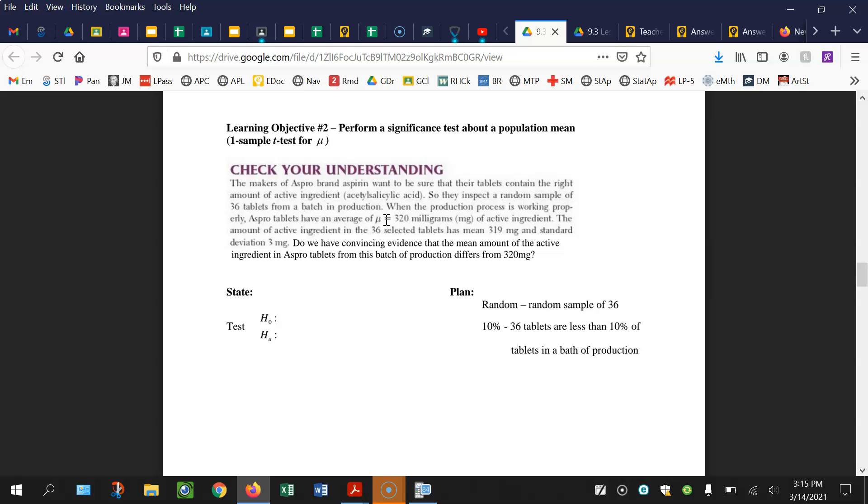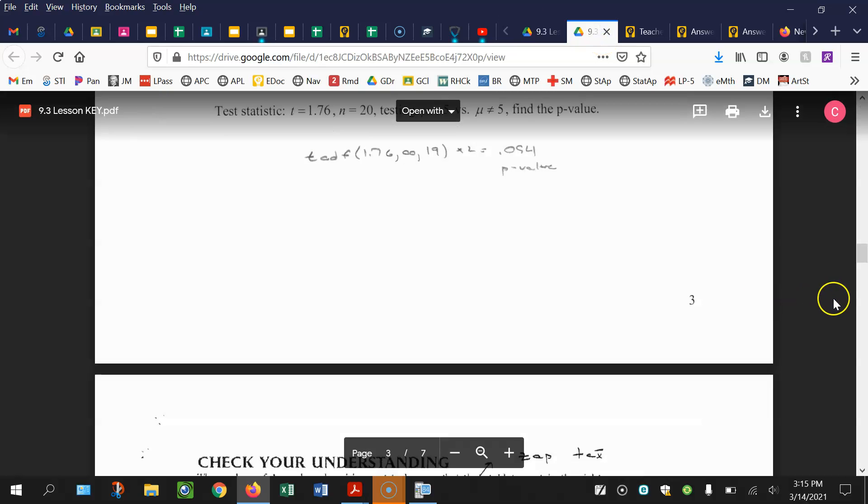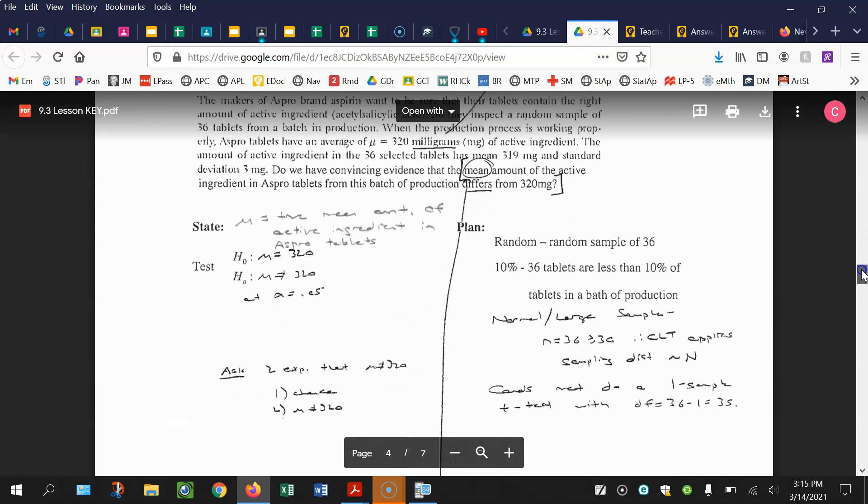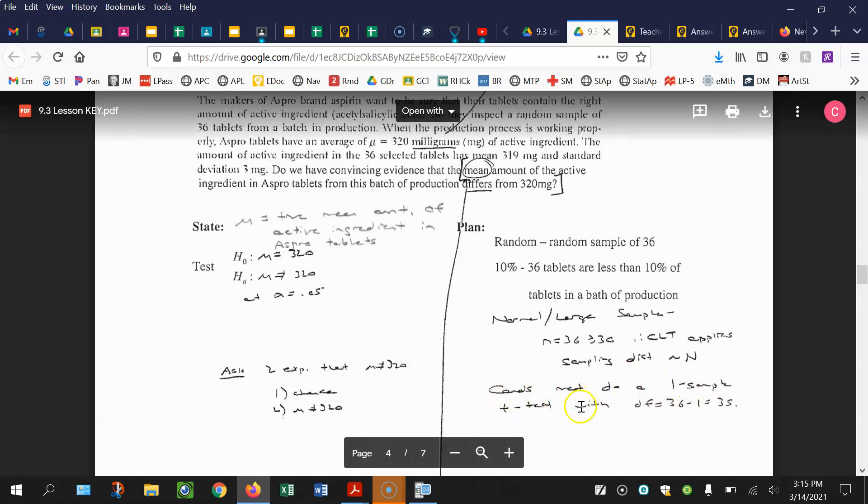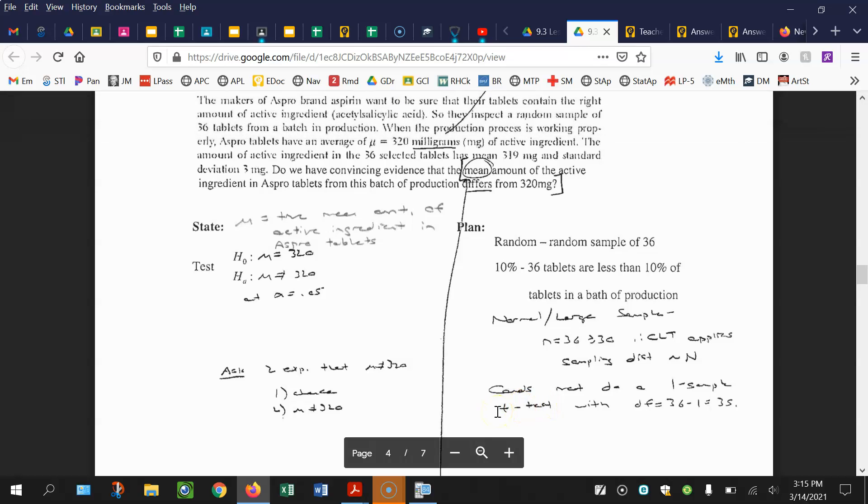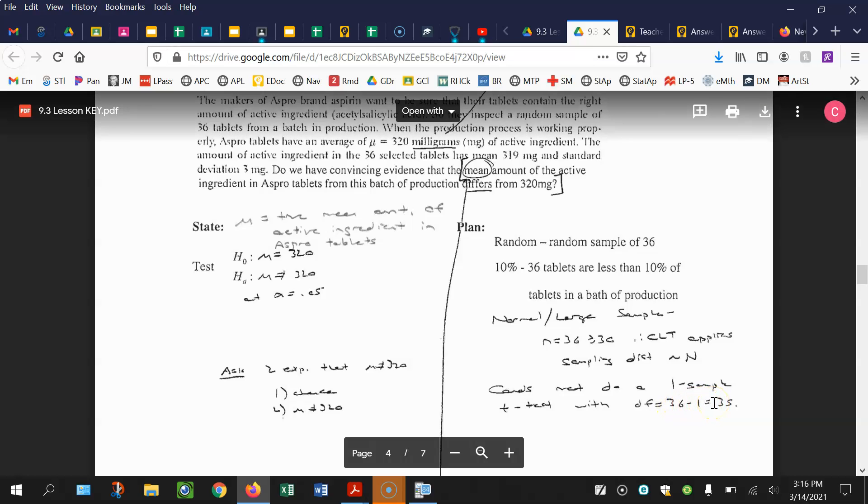Plan step. For the plan step, they already did random and 10%. Normal large sample: 36 is our sample size, which is greater than or equal to 30, so the central limit theorem applies, which means the sampling distribution is going to be approximately normal. Conditions are met. We're going to do a one-sample T test, not using the Z distribution, be very careful here, with degrees of freedom equal to 36 minus 1 or 35.